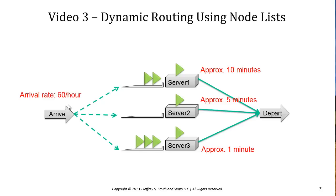Parts will arrive to our system at the rate of 60 per hour. Server one is relatively slow at approximately 10 minutes to process, server two takes approximately five minutes, and server three takes approximately one minute. That gives us processing rates of 6, 12, and 60 per hour respectively, for a total system processing rate of 78 entities per hour, so the system should be stable.